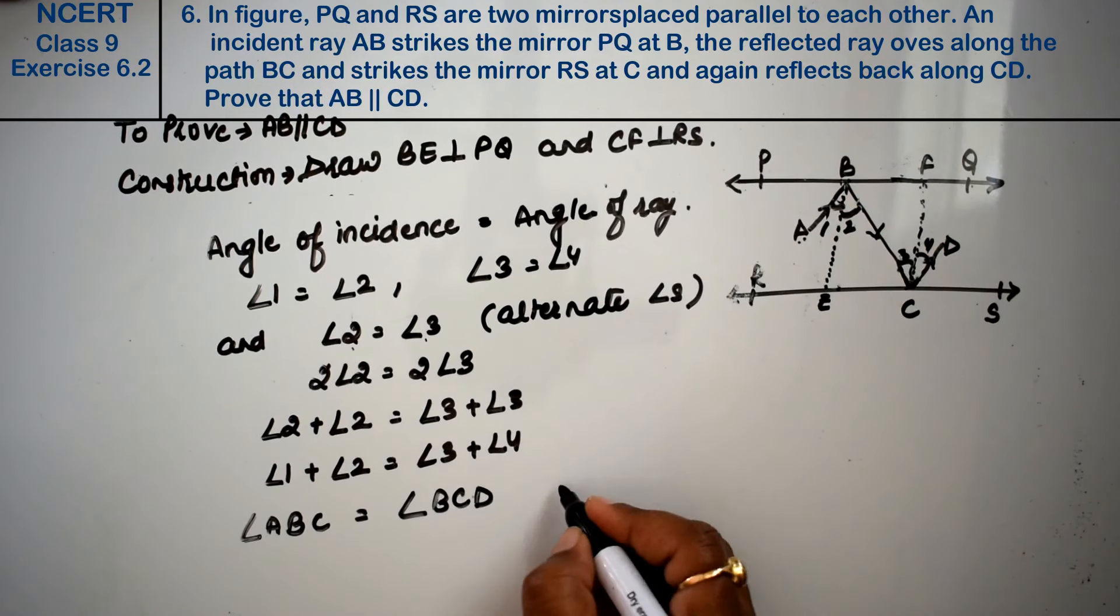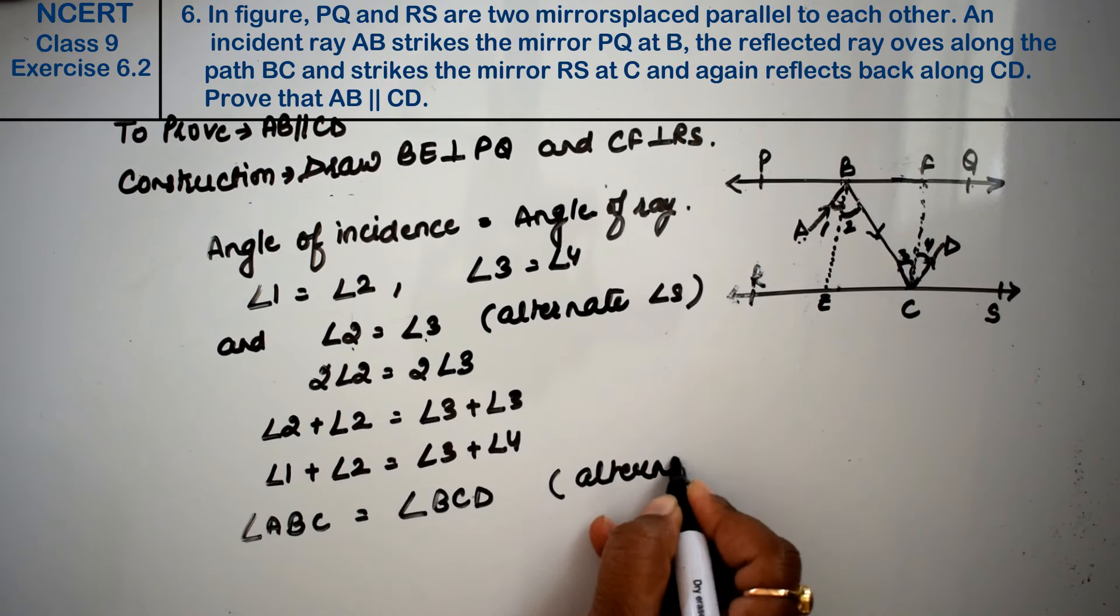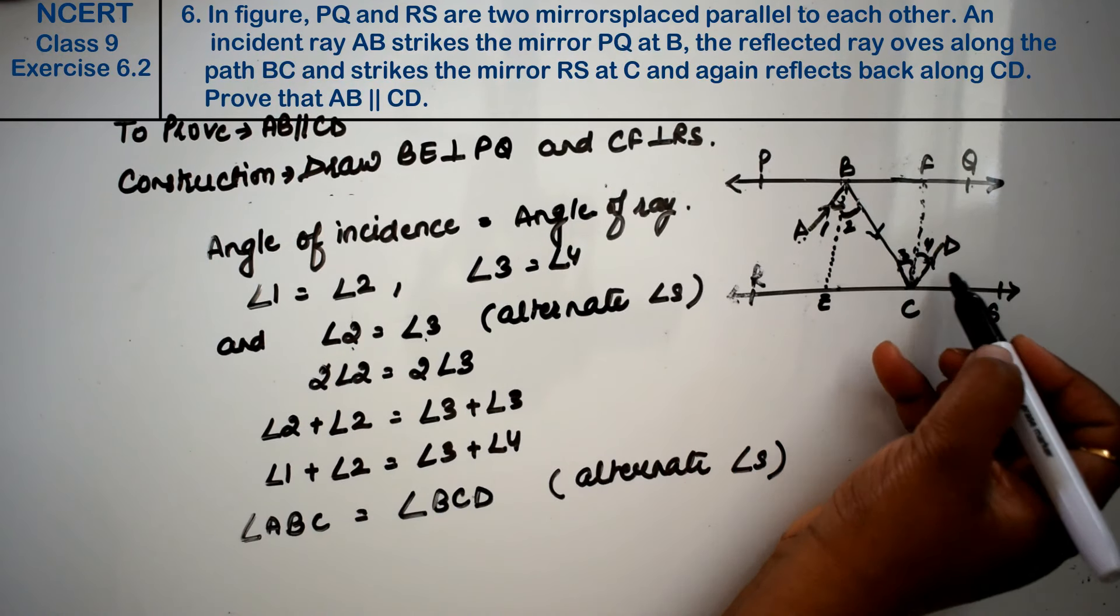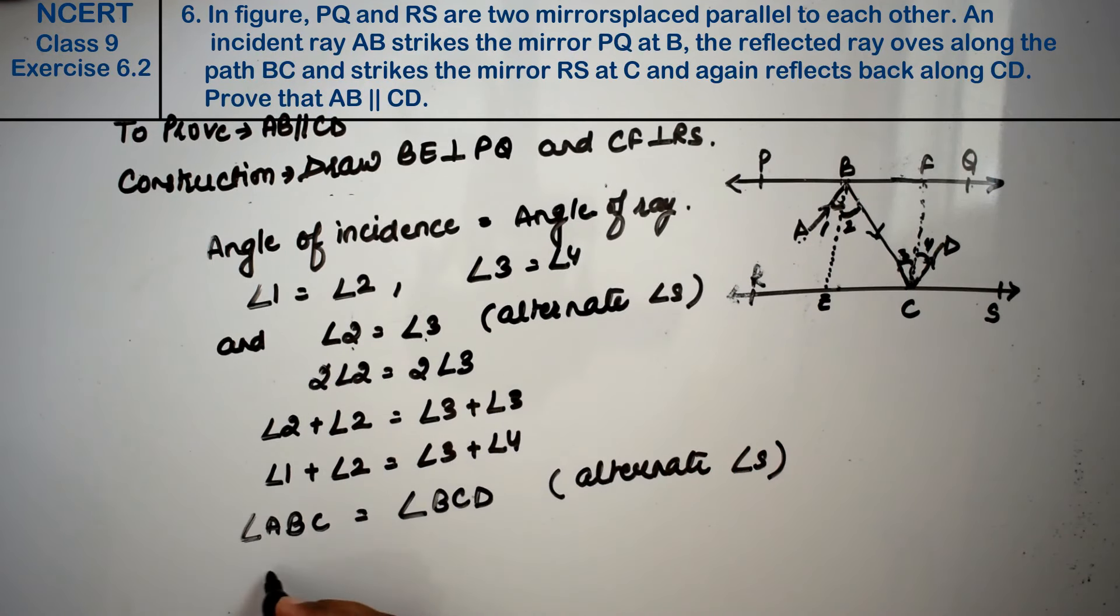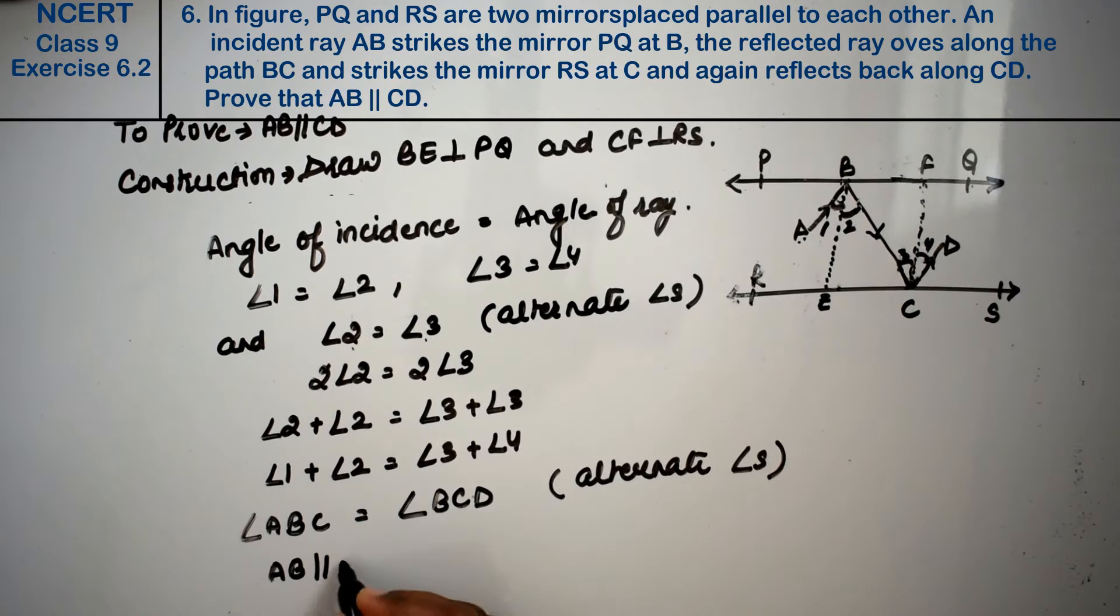These are alternate angles. So when this is equal to alternate angles, then what happens? AB is parallel to CD.